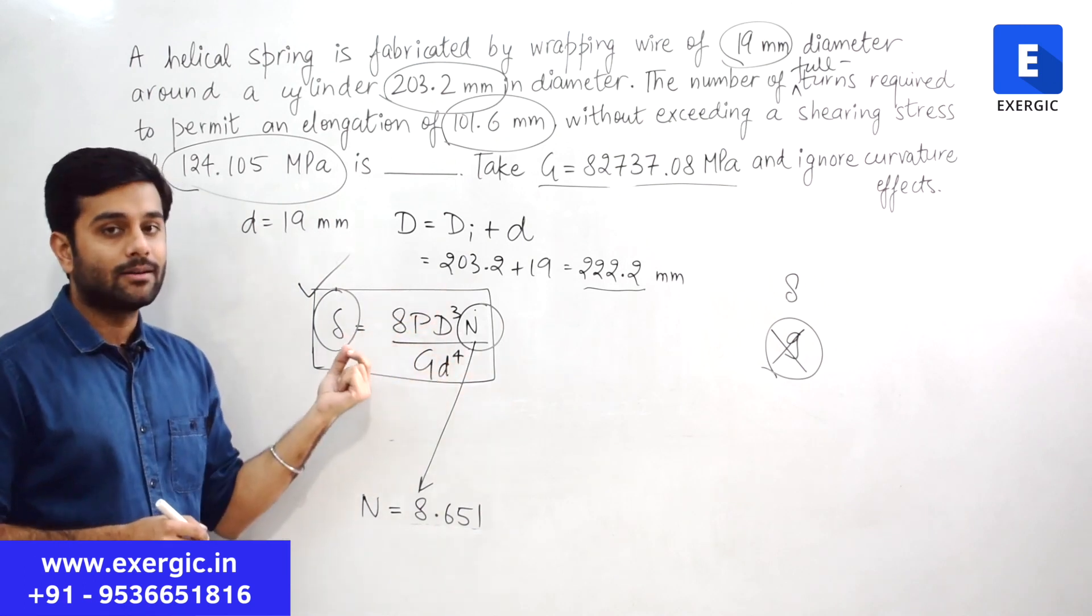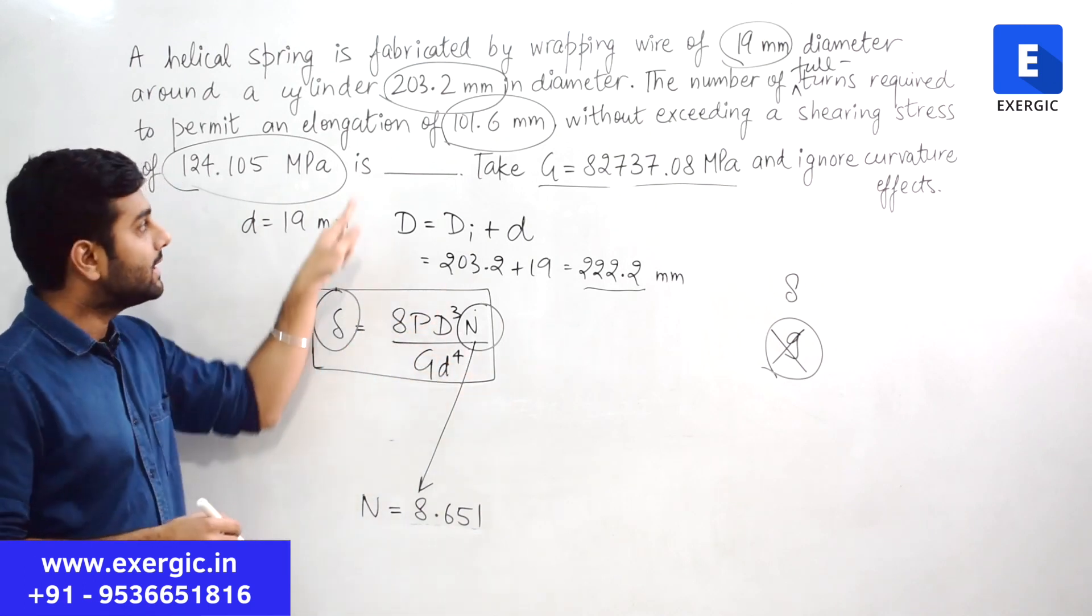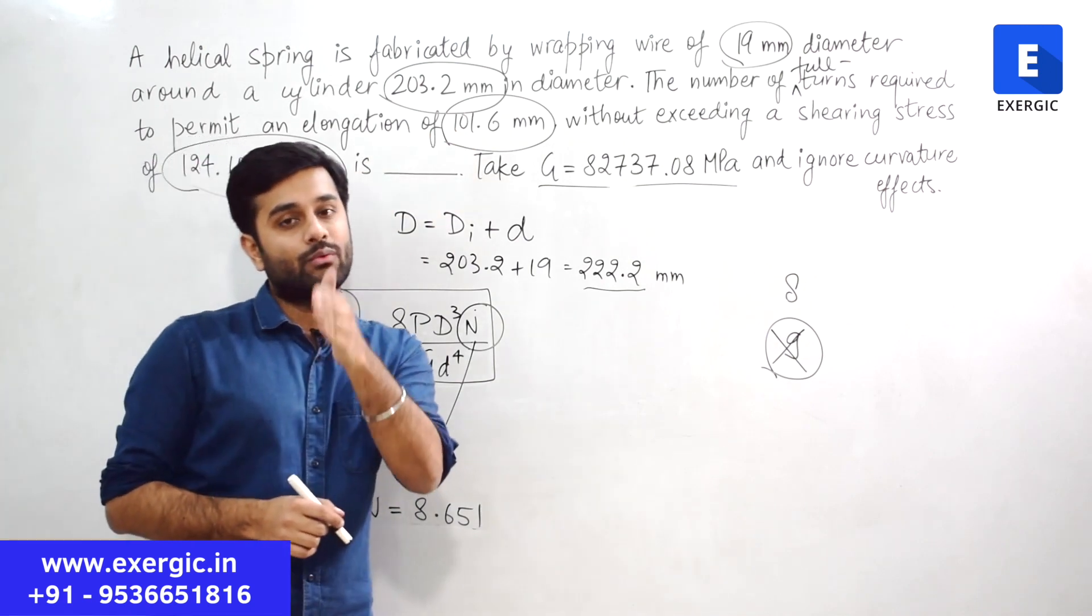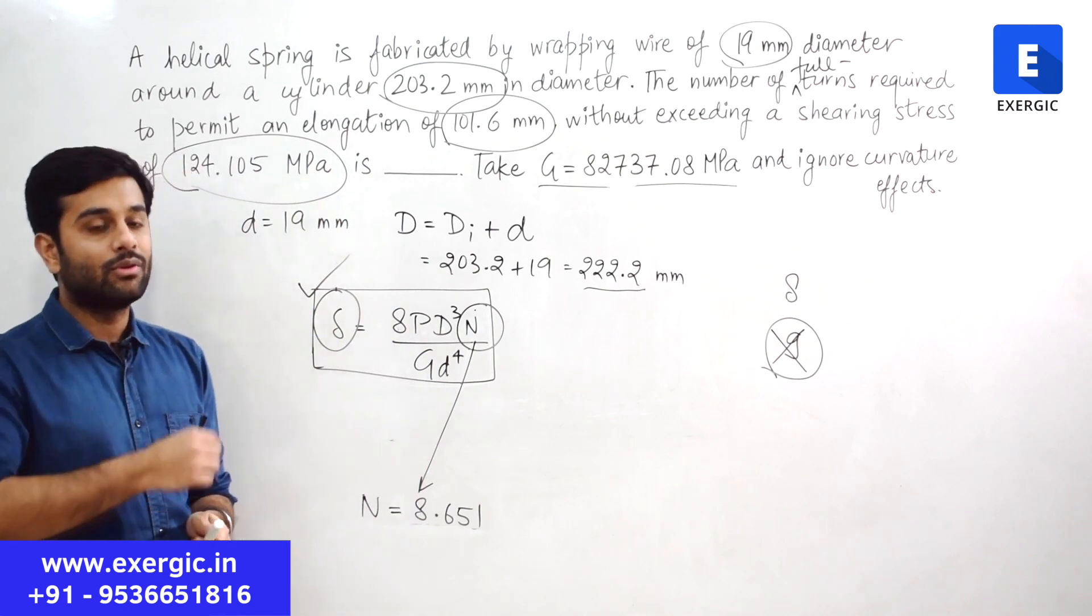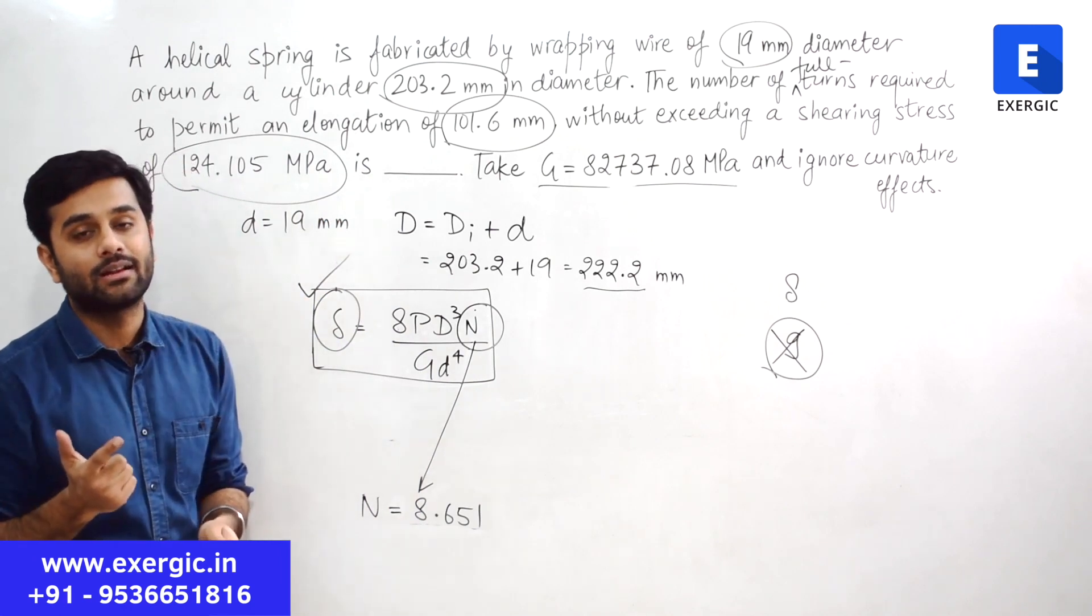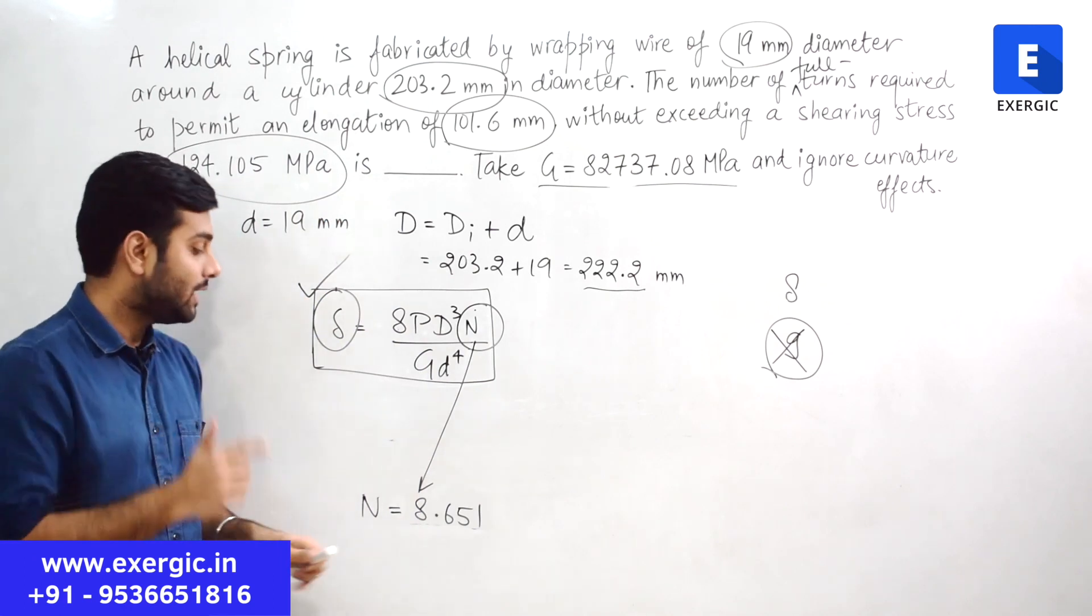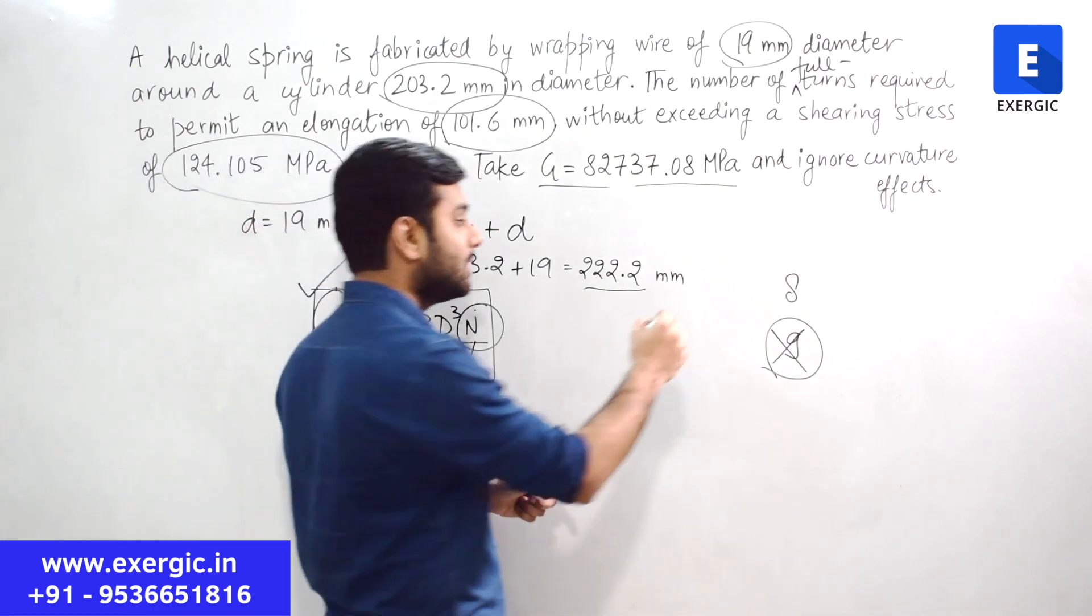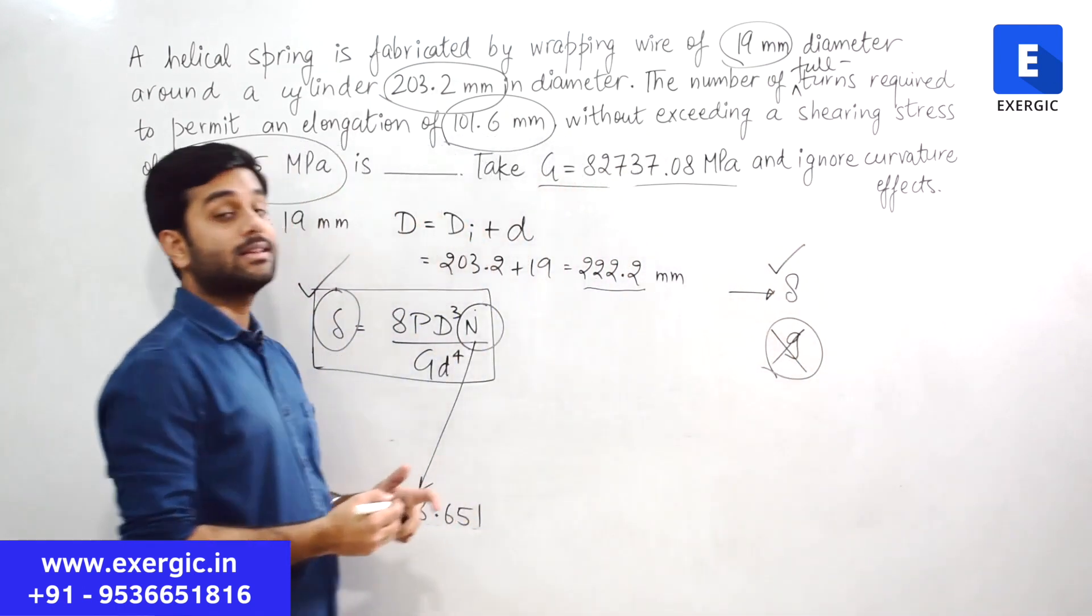Rest other things are constant which clearly means that del value will cross the value which is allowed of 101.6 mm. So you cannot convert it into the next greater integer. You have to decrease the value from 8.651. If you want to make it an integer, that you can do by keeping the value of N as 8.